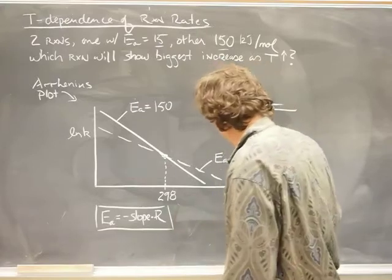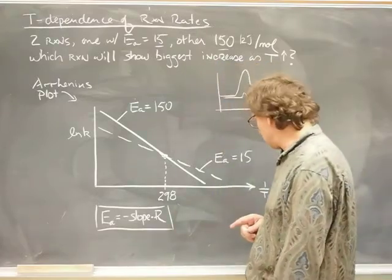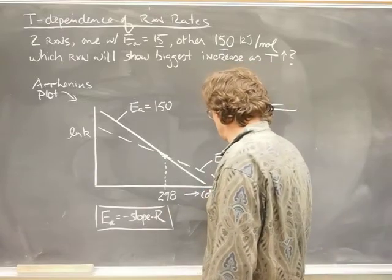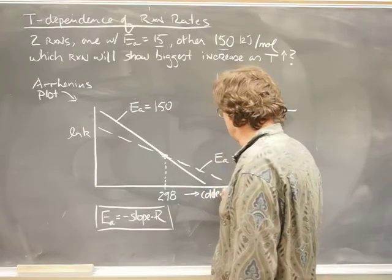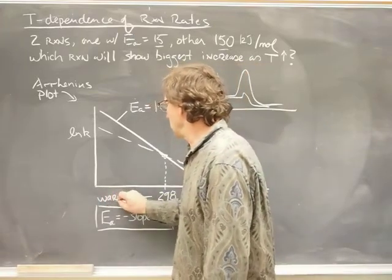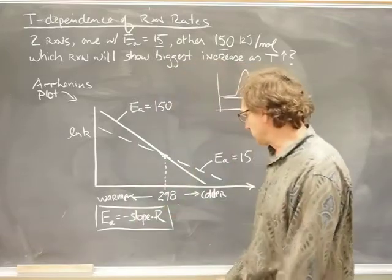Well, because the axis here is 1 over the temperature, then on an Arrhenius plot, this must be colder in this direction and this direction here must be warmer. Because it's 1 over the temperature.